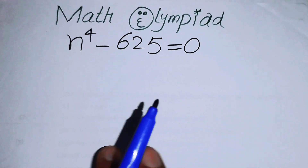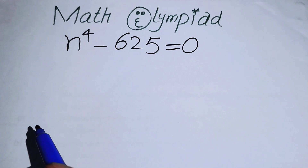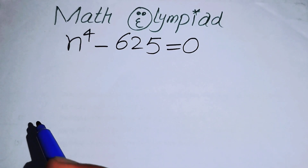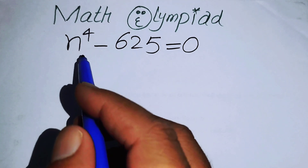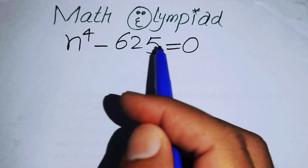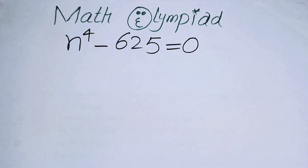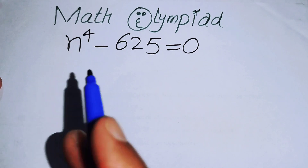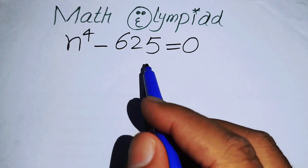Hello everyone, welcome back to the Map of Mathematics. In this video we are going to solve this nice algebra problem: n to the power of 4 minus 625 equals 0, and we will solve this problem for the values of n.